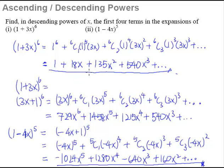So it is actually not that difficult to expand the binomial expansion in descending powers of x. All you really need to do is to pay attention to which is the one that is increasing in power and which is the one that is decreasing in power.